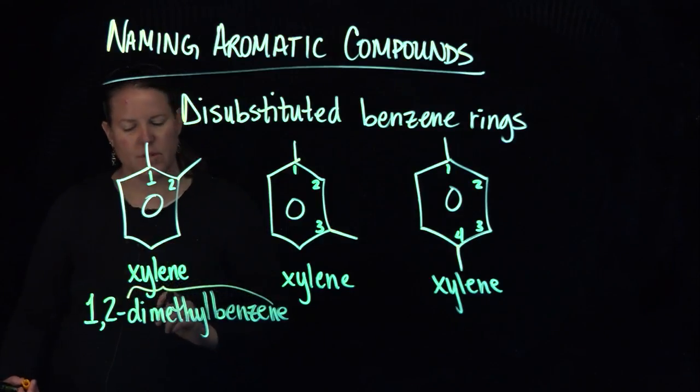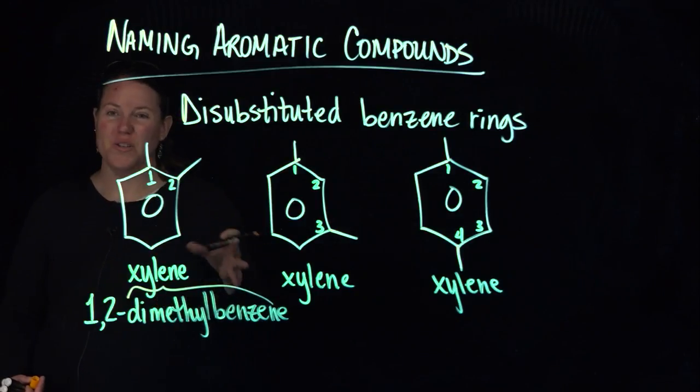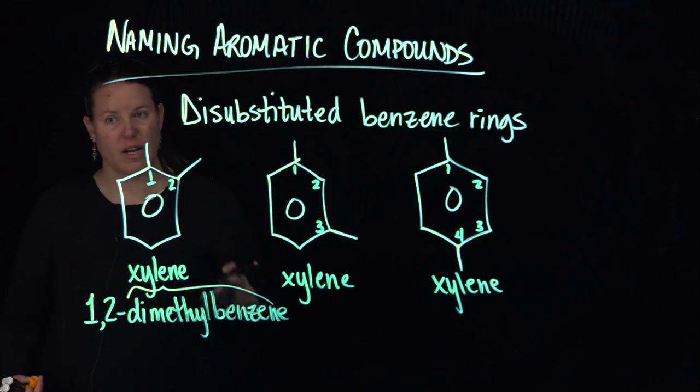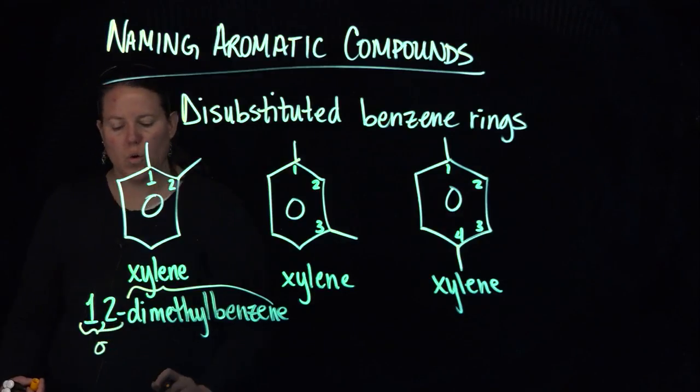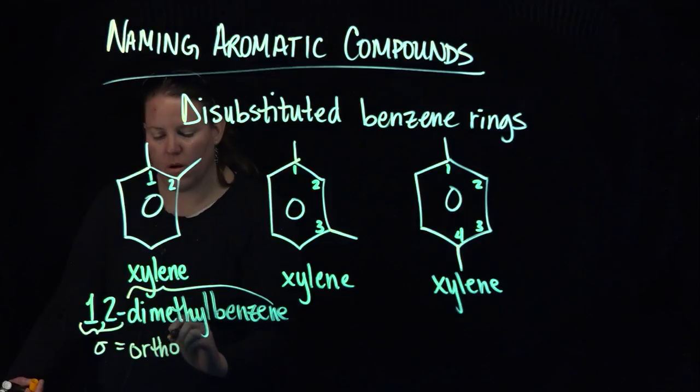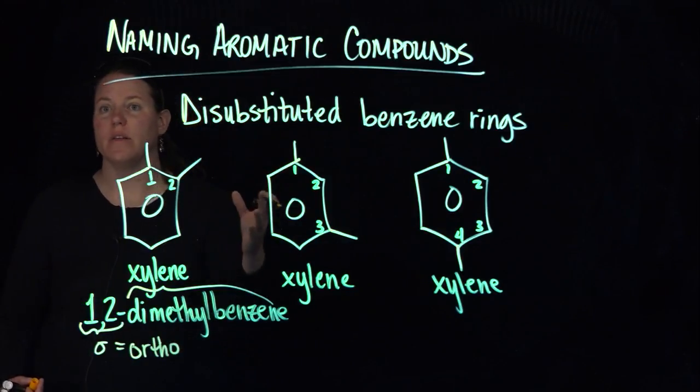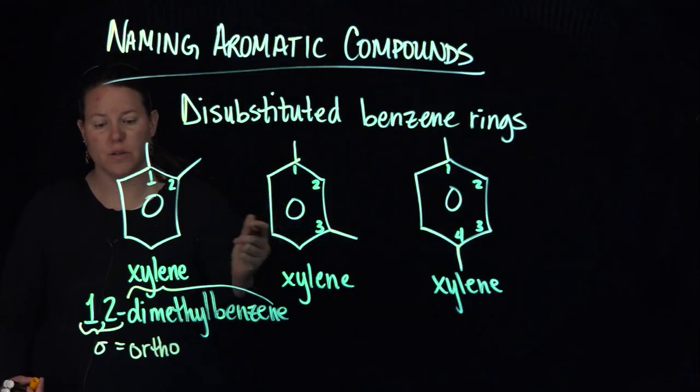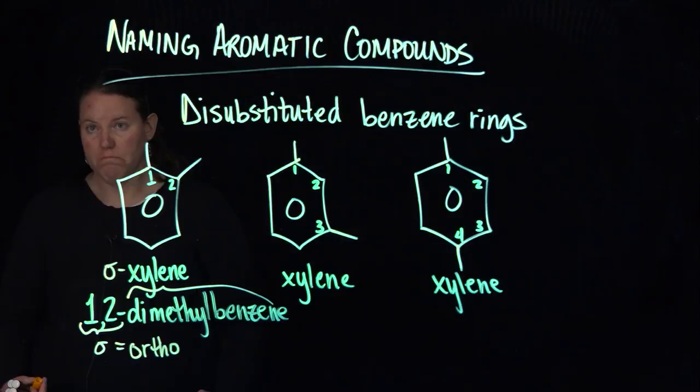But since the dimethyl benzene is taken up by xylene, we don't have to do that. We could do 1, 2-xylene, but instead of that, in organic chemistry, we have something that specifically talks about 1, 2. And that's an O. That O means ortho. Ortho is a designation for having the two substituents at 1 and 2. So all that we put here is ortho-xylene.